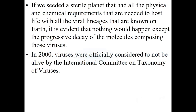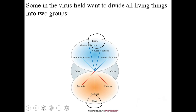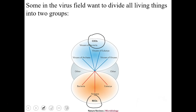Some scientists want to divide all living things into two groups: capsid-encoding organisms (all viruses) and ribosome-encoding organisms (everything else). However, this classification does not have widespread approval in the field.